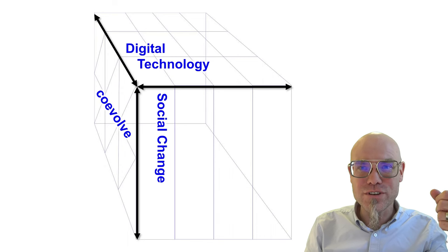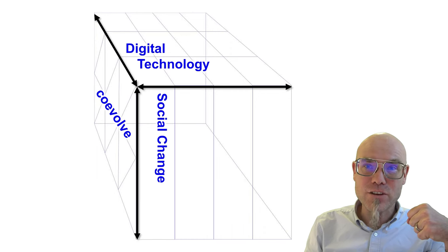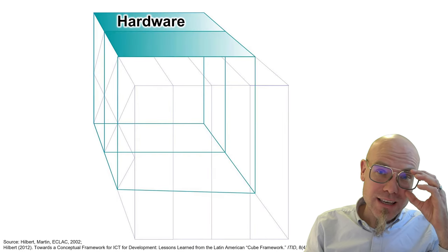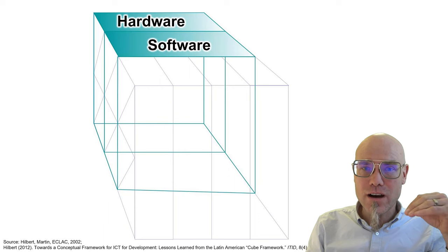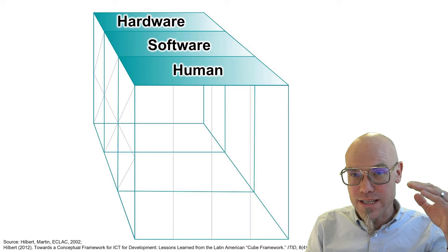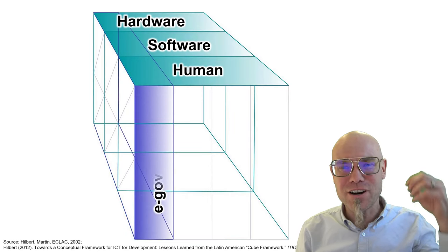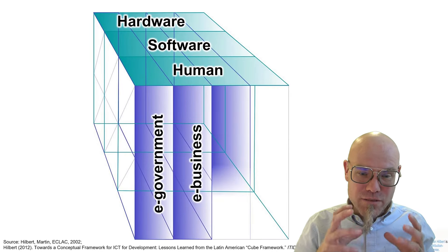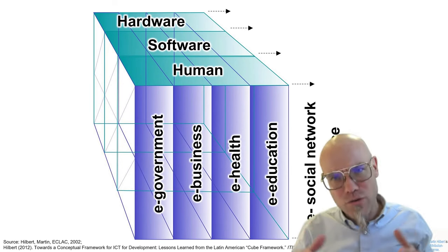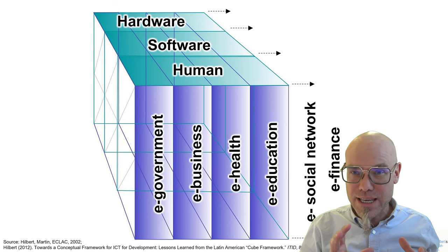We evolve into a certain direction and we assume that we humans have some agency in it. So we have hardware, software, and then the human in the loop — the human as part of the infrastructure. We use this infrastructure to put part of the information, communication, and knowledge processes into electronic networks, and in this specialization we will look into some of these applications in more detail.